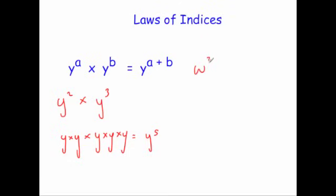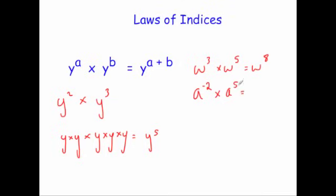Let's look at some examples. W to the power of 3 times w to the power of 5 — add the powers together — gives w to the power of 8. If we had a to the power of minus 2 times a to the power of 5, again you add the powers: minus 2 plus 5 is 3, so you get a cubed.